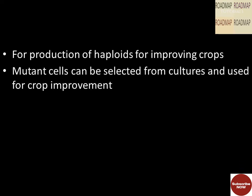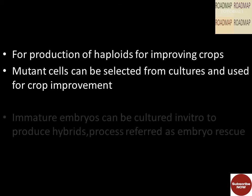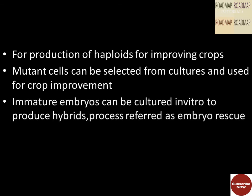It is also used for the production of haploids, improving crops with a single set of chromosomes. Mutant cells can be selected from cultures and used for crop improvement. Immature embryos can be cultured in vitro to produce hybrids, a process referred to as embryo rescue.